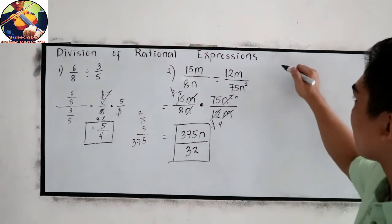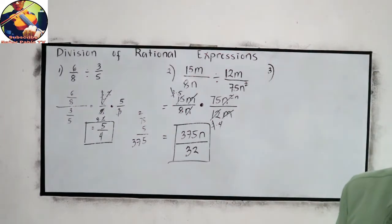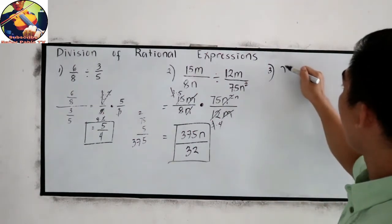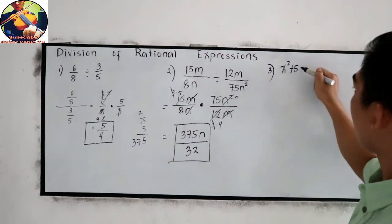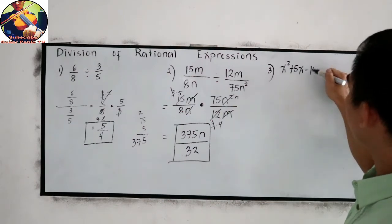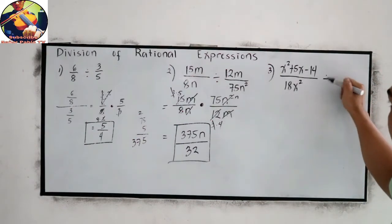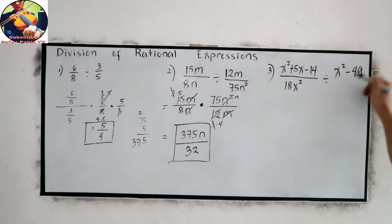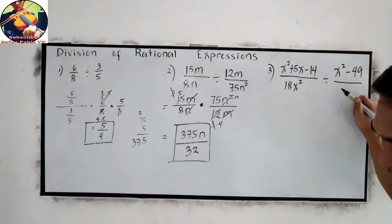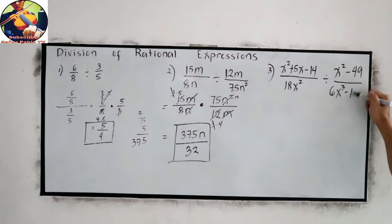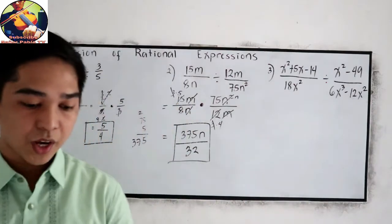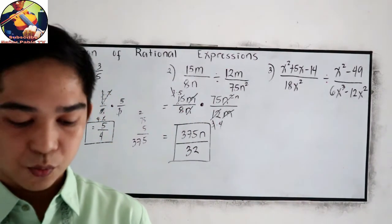How about this one? Number 3: x squared plus 5x minus 14 all over 18x squared divided by x squared minus 49 all over 6x cubed minus 12x squared. If you want to answer number 3, you can close the video. Then after answering, resume watching.